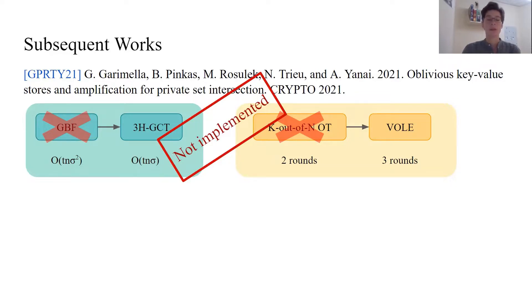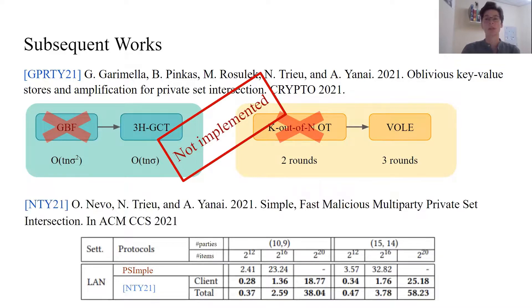Both PSImple and Garimella et al. 2021 work with the fully malicious setting, where all the parties but one can be corrupt. The other subsequent work of Nevo et al. 2021 constructs the MPSI protocol for the relaxed security requirements when there is a threshold for the number of corrupt parties. If this threshold is the number of parties minus one, then their protocol is the same as Garimella et al. 2021. And if it is smaller, then the communication complexity is lower. This work has an excellent implementation, which expectably outperforms ours.